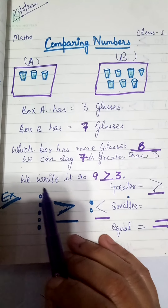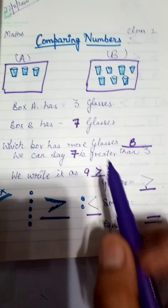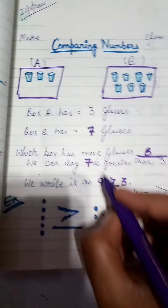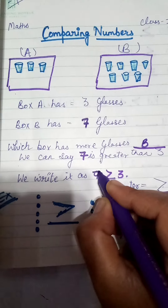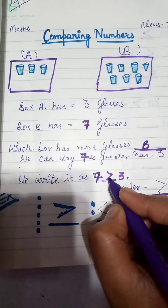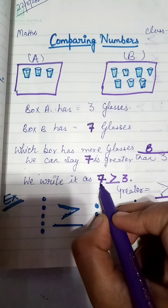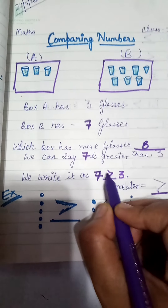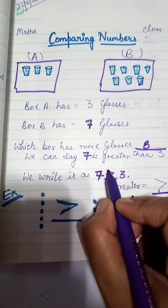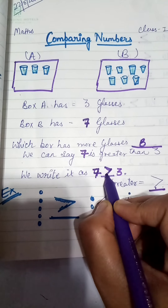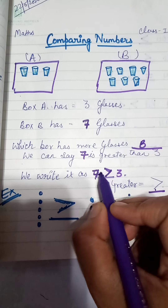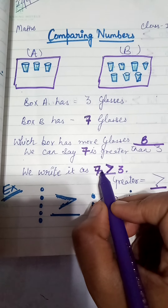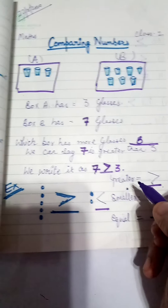So we write it as — as I told you, this is the alligator's mouth. This is seven and three. Which one is greater? Seven. So the alligator is going to open his mouth from the seven side.